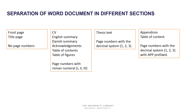Then you have the main part of the thesis — the thesis text — and here you have ordinary page numbers running from one and upwards. Then you have the last part: the appendixes, table of contents, and so on. These have page numbers with the decimal system, like the thesis text, but with an APP prefix before the page number.